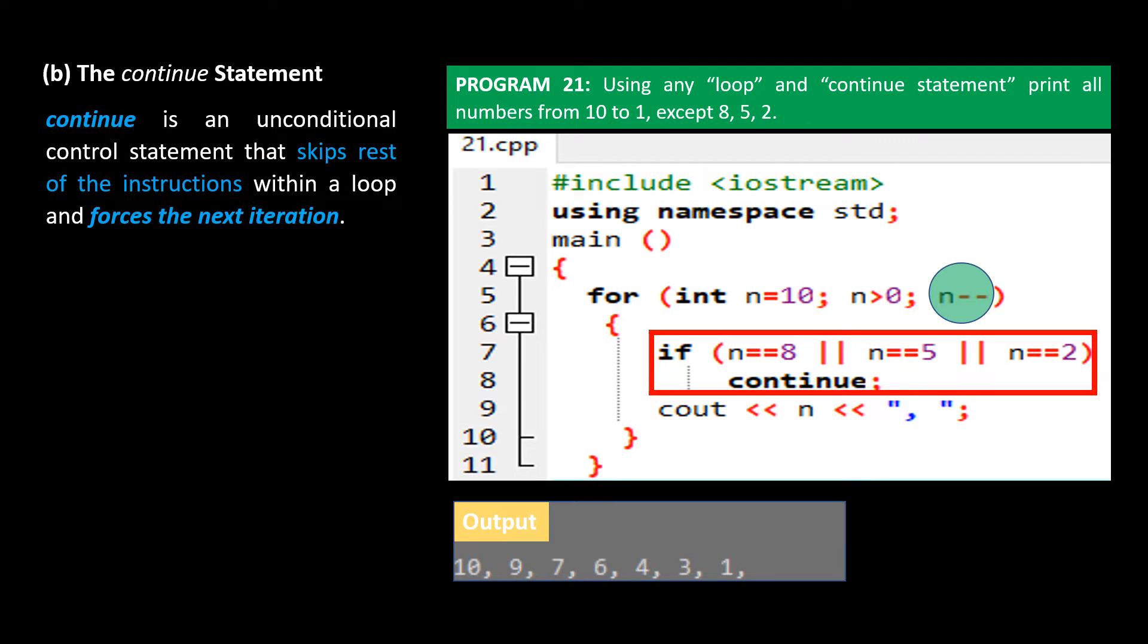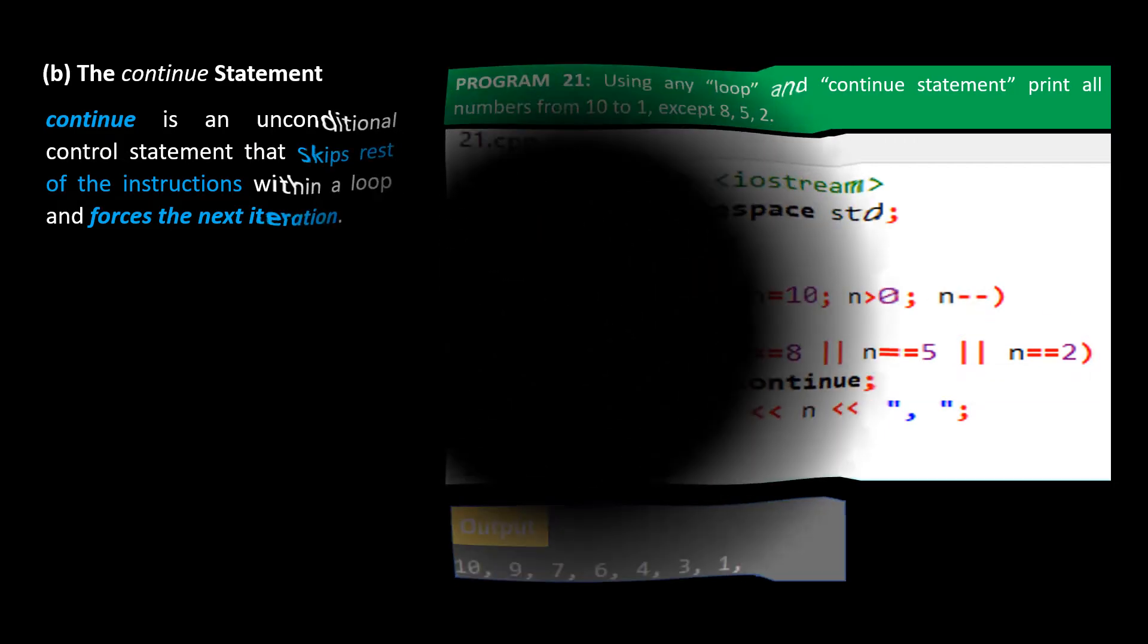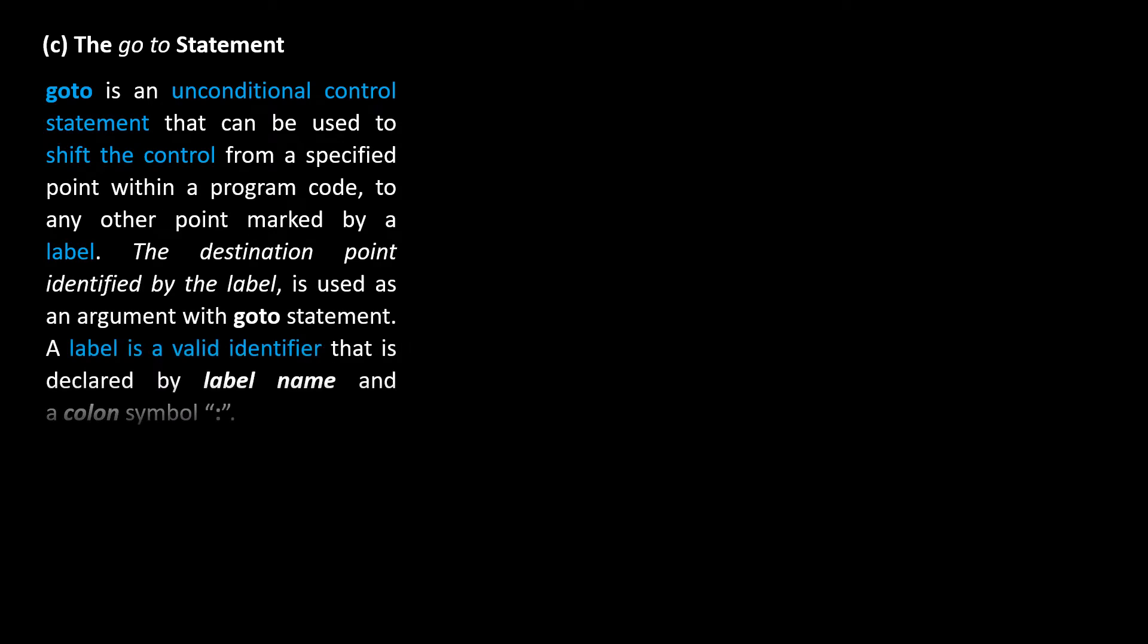The goto statement. Goto is an unconditional control statement that can be used to shift the control from a specified point within a program code to any other point marked by a label. The destination point identified by the label is used as an argument with goto statement. A label is a valid identifier that is declared by label name and a colon symbol. Syntax is goto label. For example, goto .1.